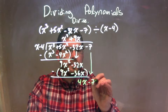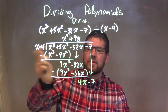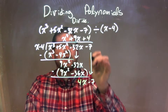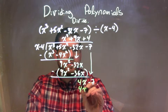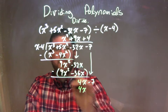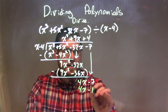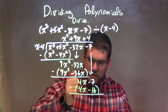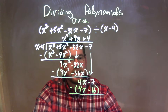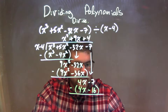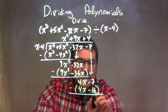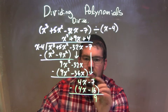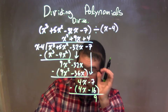Bring down the minus 7. What times x gives me 4x? And that's just a 4, so we add a 4 here. 4 times x is 4x. So we have 4 times minus 4 as a minus 16. We subtract the two. So 4x minus 4x is just 0. And negative 7 minus a negative 16 is like adding a positive 16, which comes out to be a positive 9.